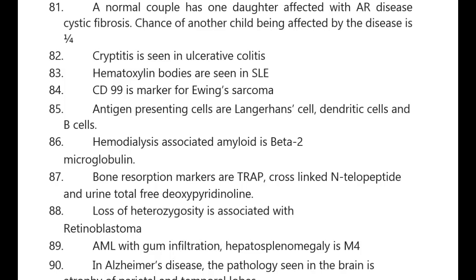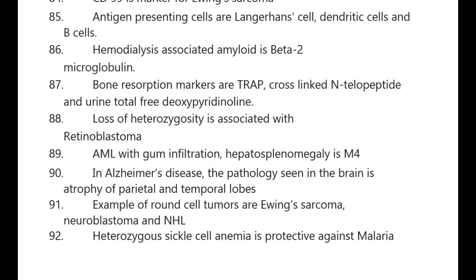A normal couple has one daughter affected with autosomal recessive disease (cystic fibrosis); chance of another child being affected is one fourth. Cryptitis is seen in ulcerative colitis. Hematoxylin bodies are seen in SLE. CD99 is a marker for Ewing's sarcoma. Antigen presenting cells are Langerhans cells, dendritic cells, and B cells. Hemodialysis-associated amyloid is beta-2 microglobulin.